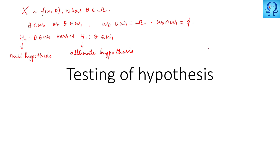This alternate is often referred to as the research worker's hypothesis. For example, suppose some crime happened and we suspect someone. The null hypothesis would be: the suspect is not guilty. To prove not guilty, you don't have to produce anything — unless and until you prove that person has done something, he is not guilty. The alternate hypothesis would be: he is guilty. In order to prove guilty, you will have to produce some evidence. This gives an intuitive idea of what null and alternate hypothesis mean.